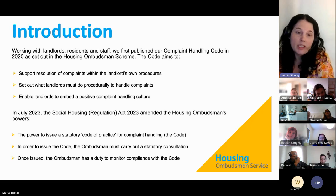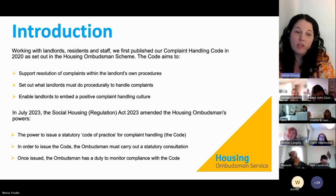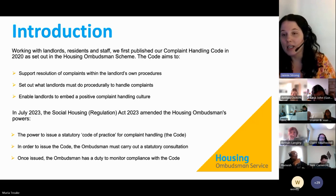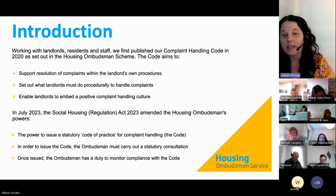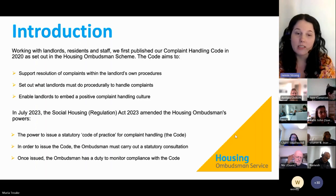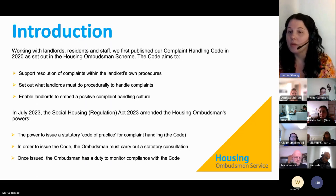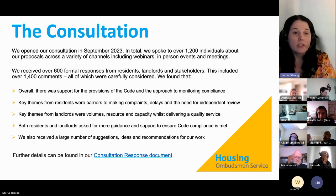In July 2023 the Social Housing Regulation Act 2023 amended our powers in relation to the complaint handling code. It gave us the power to issue a statutory code of practice for complaint handling — that is our complaint handling code, or simply 'the code.' The Act also explained that in order to issue that statutory code of practice we had to carry out a statutory consultation, and that once issued we had a duty to monitor landlords' compliance with the code.